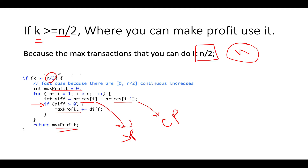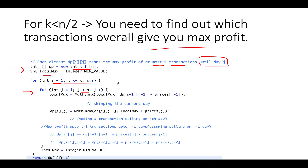Since k is greater than n/2, whatever profits we see across the entire array we can accumulate into max_profit to maximize the overall profit — a simple and easy case. Now for the harder case: we have a local_max variable, and we take the maximum of local_max and dp[i-1][j-1], which represents the maximum profit using i-1 transactions up to j-1 days, minus the price at day j-1.